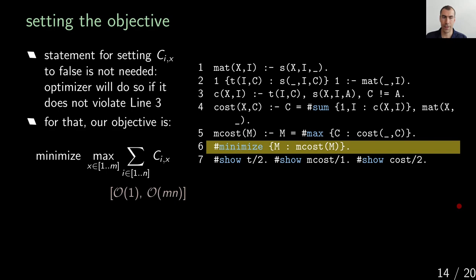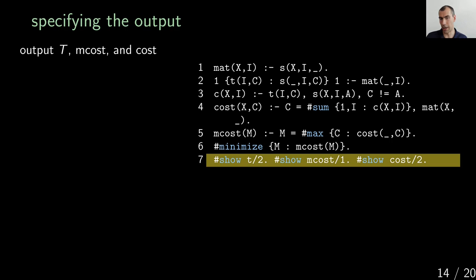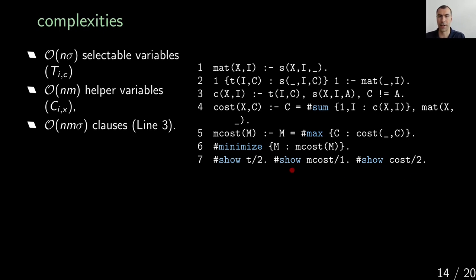The final thing is that we want to output t, the target string, the maximum cost, and the individual costs. In the end, the complexities are: n·|sigma| selectable variables for the target string (since for each text position you have |sigma| choices), an n×m matrix for the costs, and looking at line three you can see three variables interacting: m, n, and |sigma| — giving m·n·|sigma| clauses generated for line three.